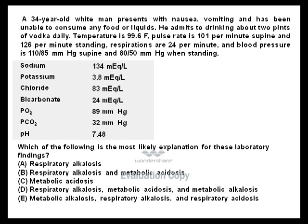A 34-year-old white man presents with nausea and vomiting and has been unable to consume any food or liquids. He admits to drinking about two pints of vodka daily. Temperature is 99.6°F. Pulse is 101 supine but rises to 126 standing. Respirations are 24 per minute. Blood pressure is 110/85 supine but drops to 80/50 when standing. The clinical scenario suggests hypovolemia and evolving early sepsis.